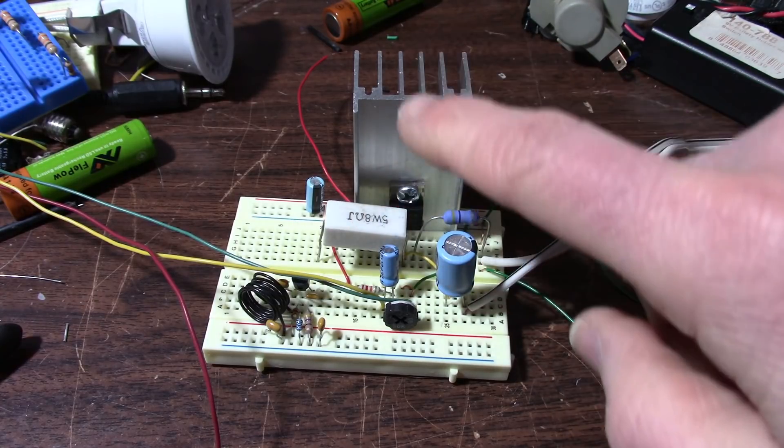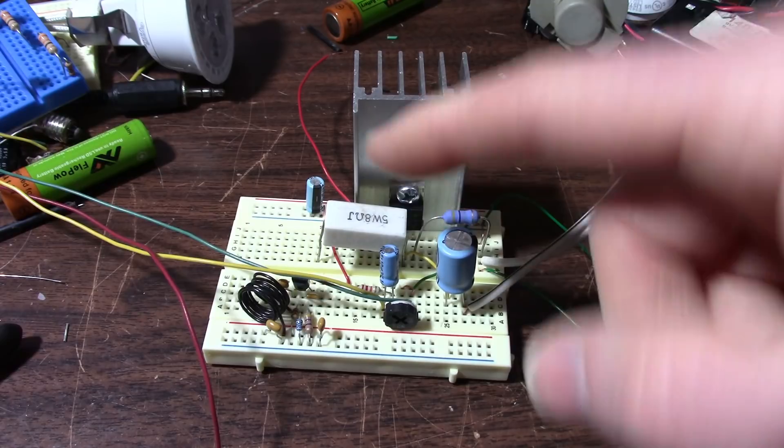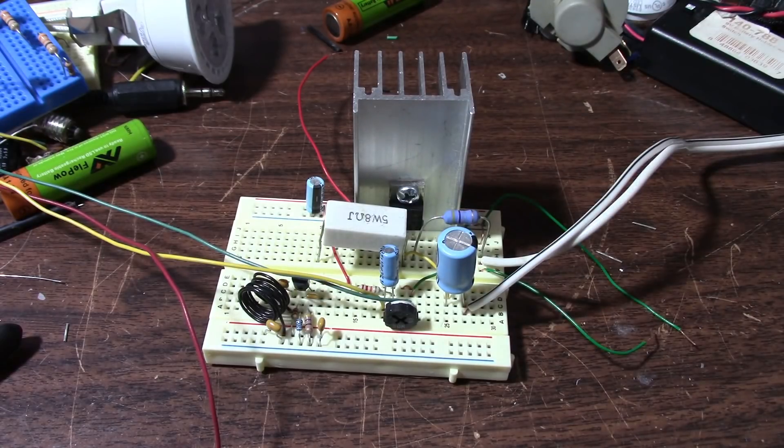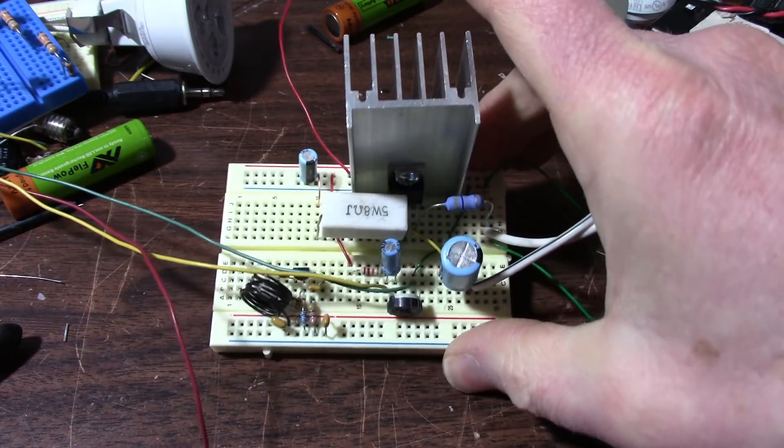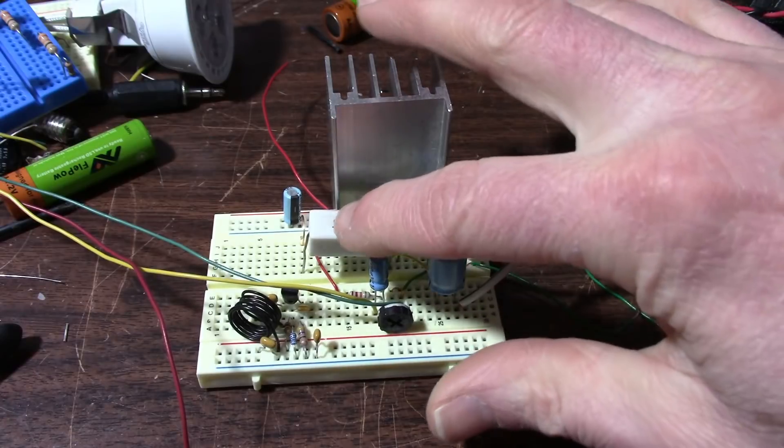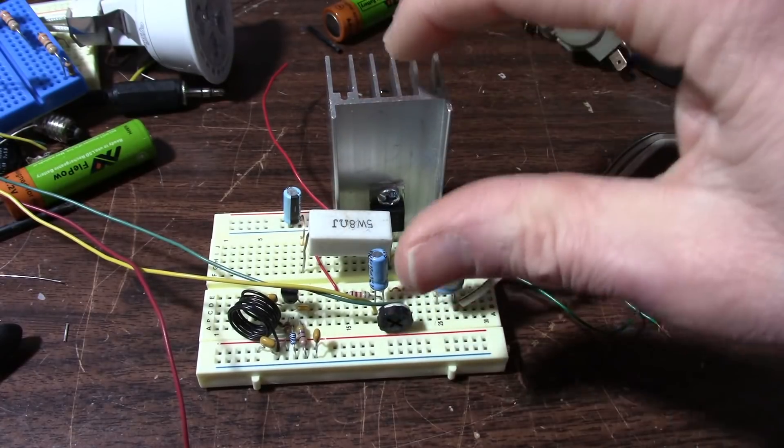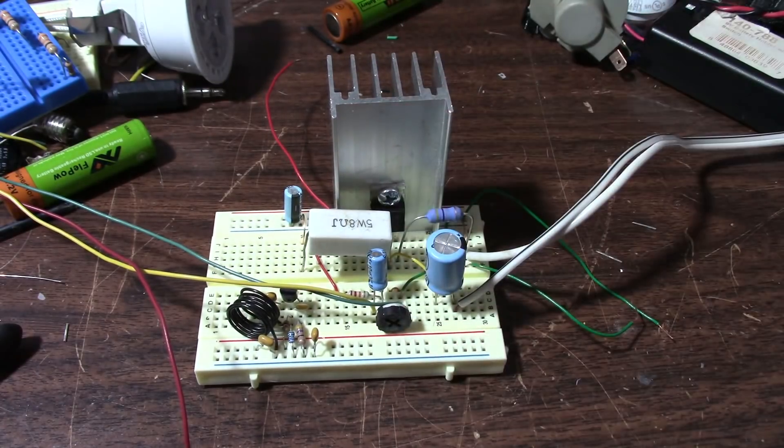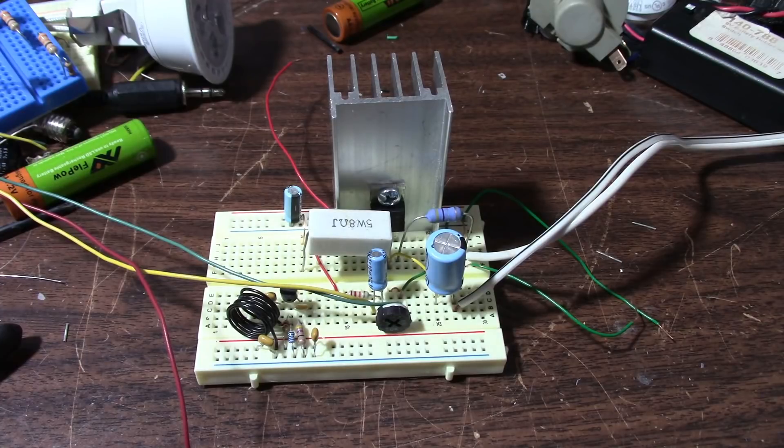Also, it consumes an enormous amount of power to get that 360 milliwatts. It draws just shy of 6 watts from the power supply. So, you know, these parts get pretty hot, the transistor and resistor here.